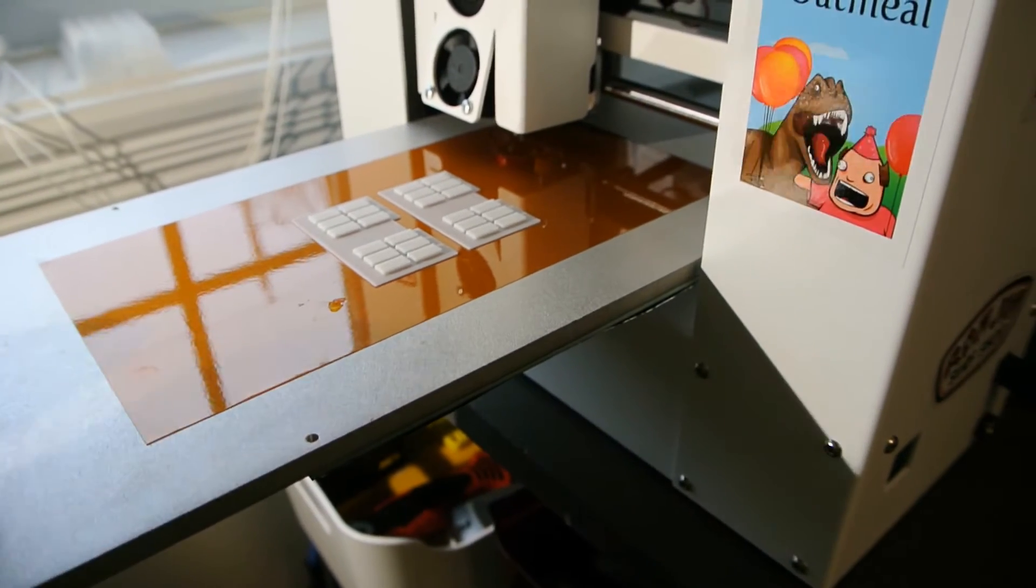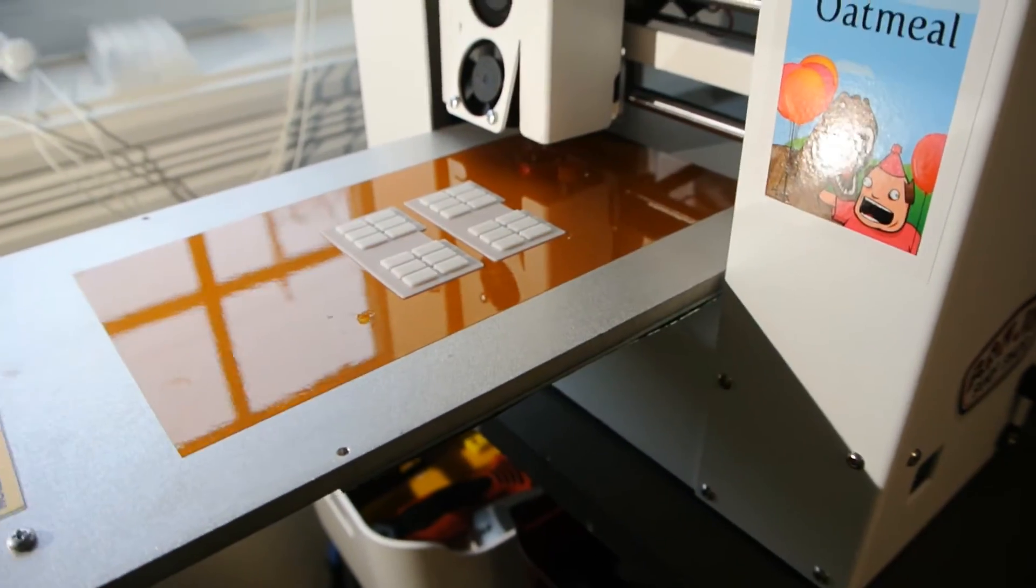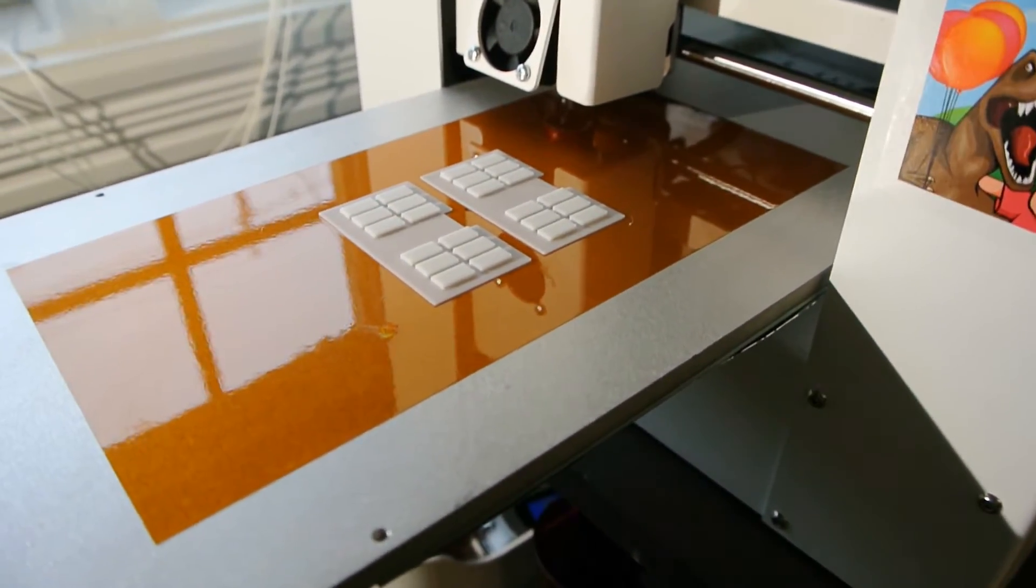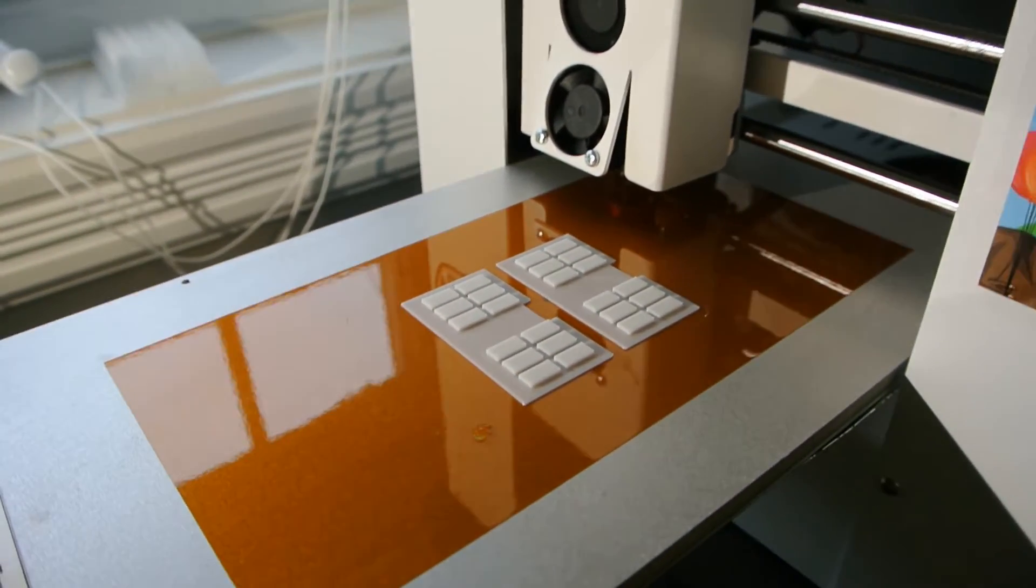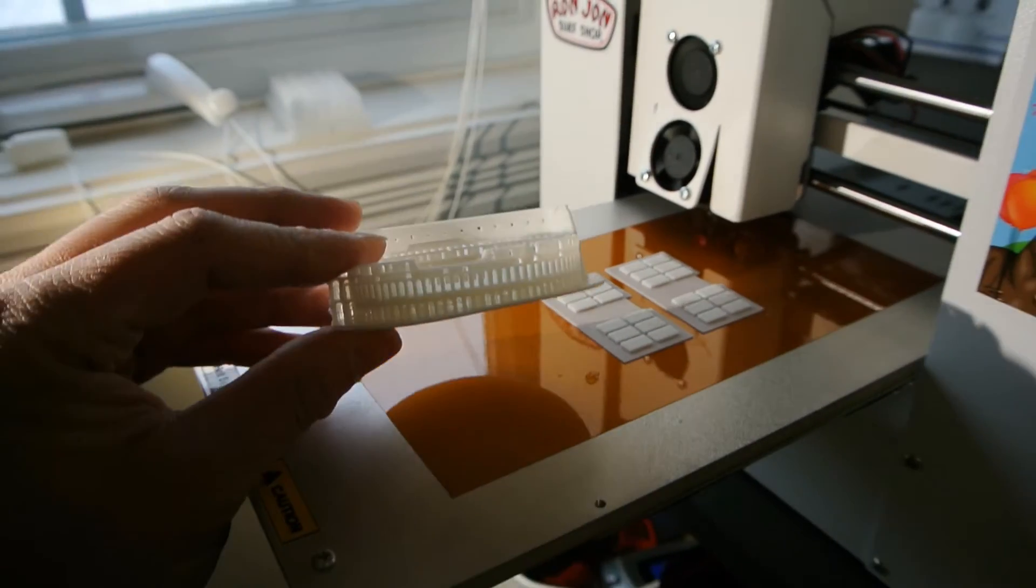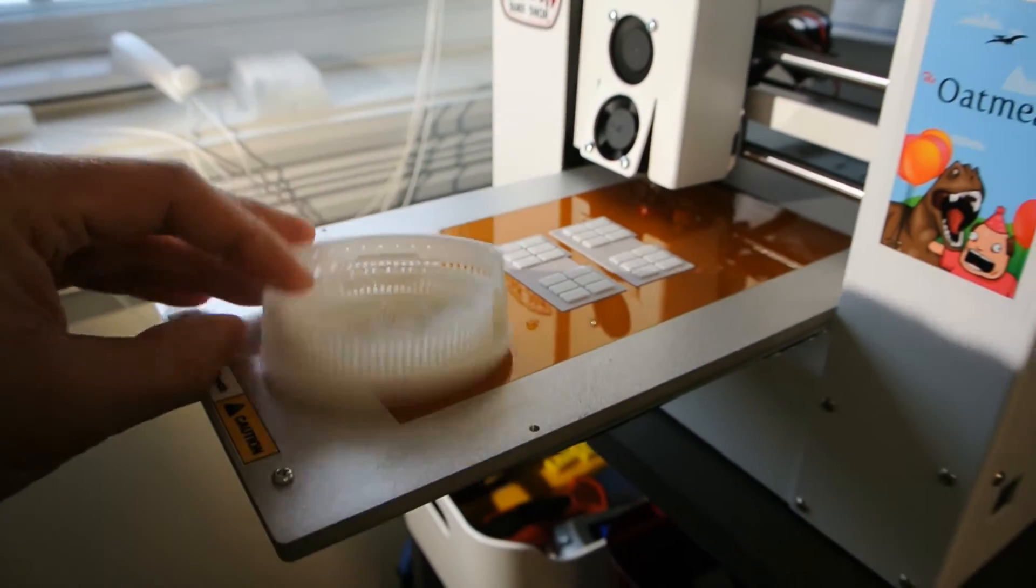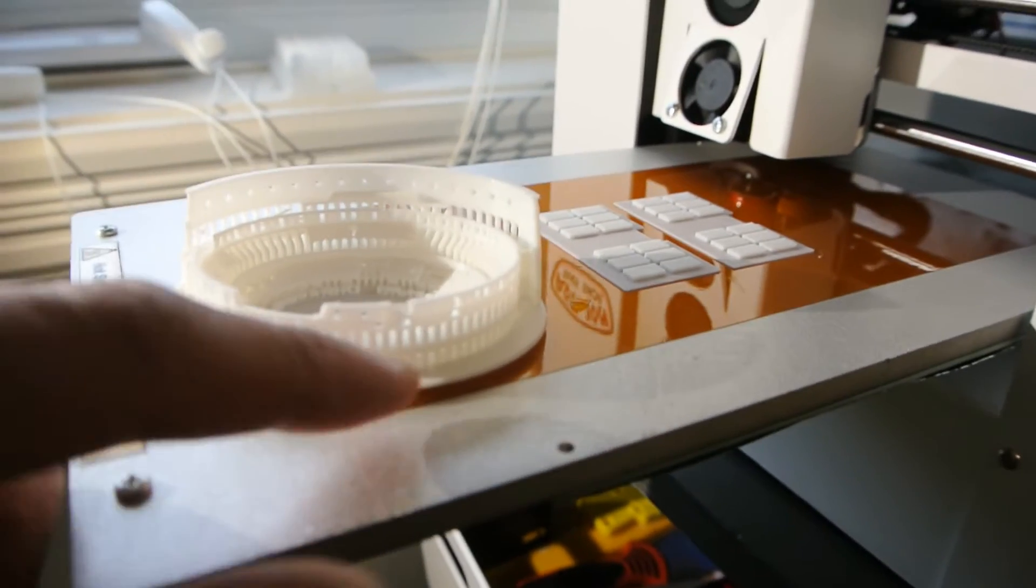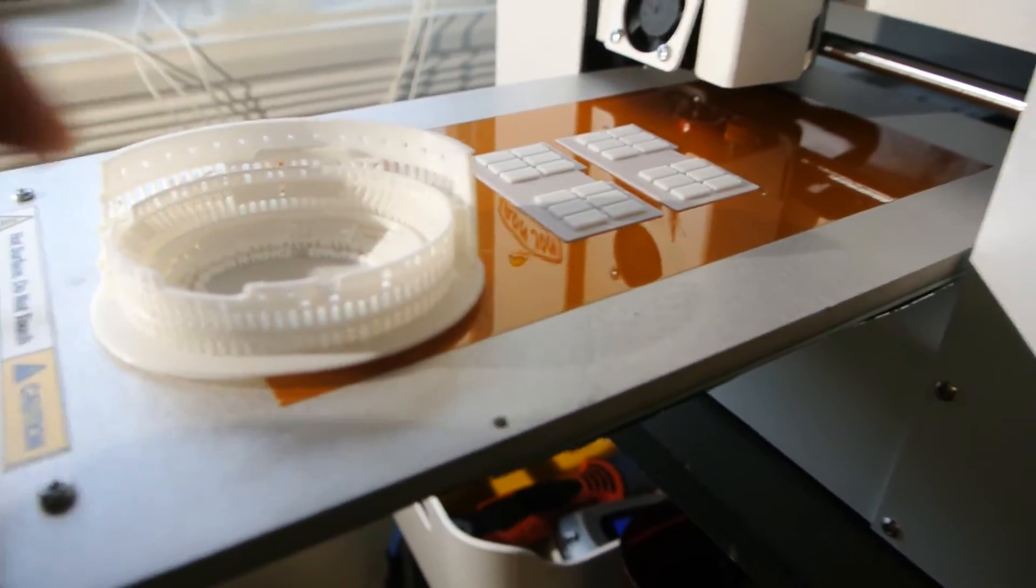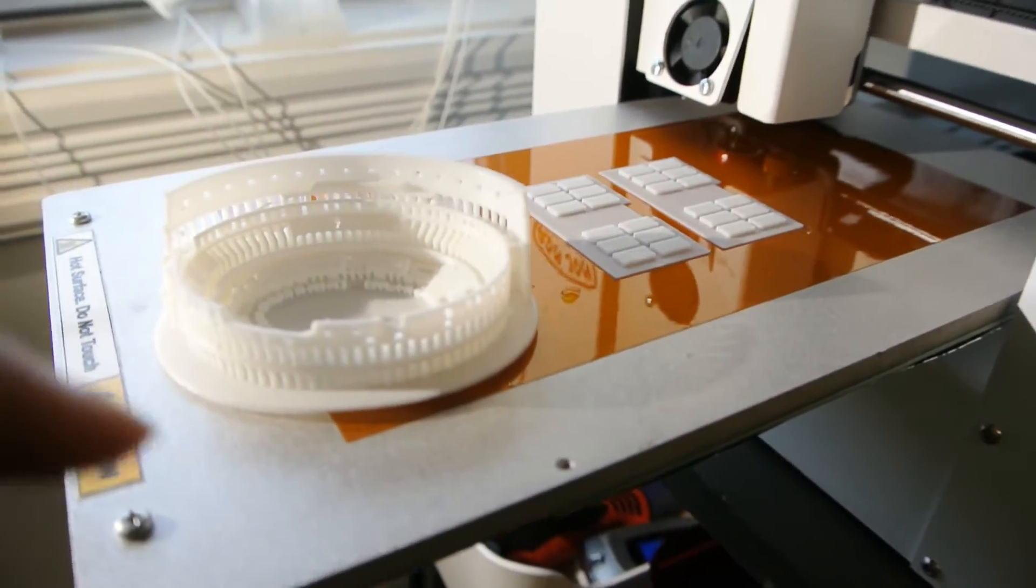So what this allowed me to do now, besides be able to print bigger, is I can print objects that are flat and don't cool at the same rate with a higher success rate. So here's something I printed before and, as you can see, it's curled at the bottom here because it cooled at a different rate as it was printing all the way around.